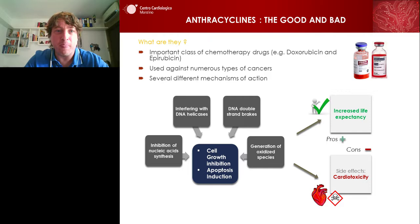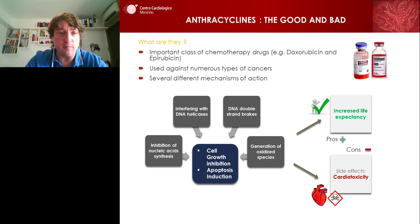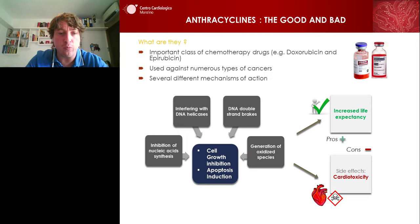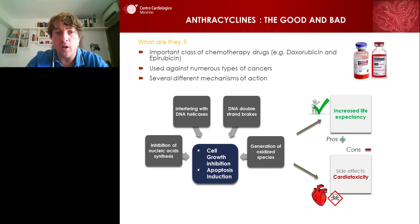Today we'll talk about some effects of anthracyclines, which are an important class of chemotherapy drugs. They are used against several kinds of cancers and they work by different mechanisms of action. This mechanism results in two principal outcomes: cell growth inhibition and apoptosis induction, which are very important against highly proliferating cells like cancer cells. So obviously the main effect is to fight cancer and increase the life expectancy of subjects with cancer.